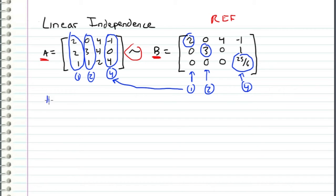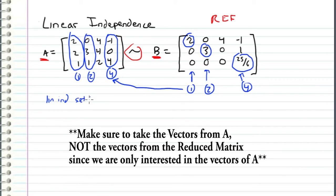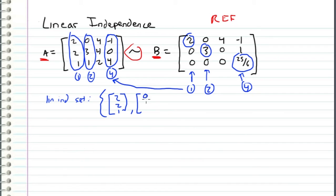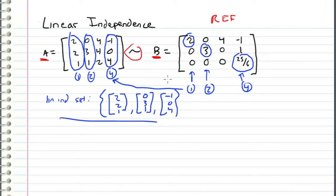We can write the linearly independent set as the set containing the vectors (2, 2, 1, 0), (3, 1, -1, 0), and (4). What this means is that if a column is a pivot column in the reduced form, then it will also be a pivot column in the original matrix, which means it is linearly independent with the other vectors.